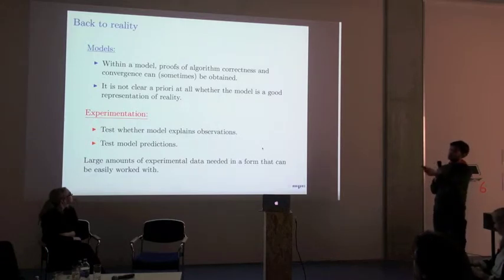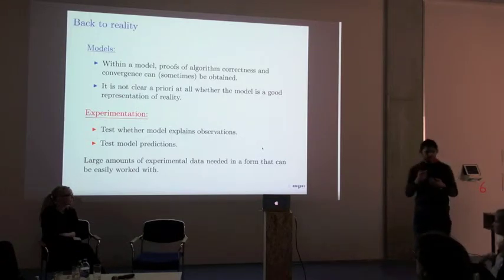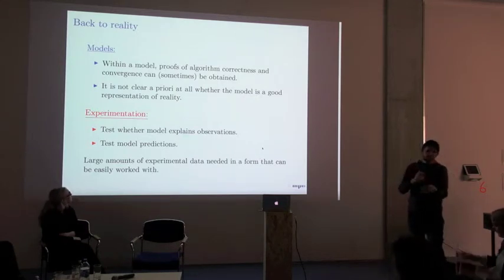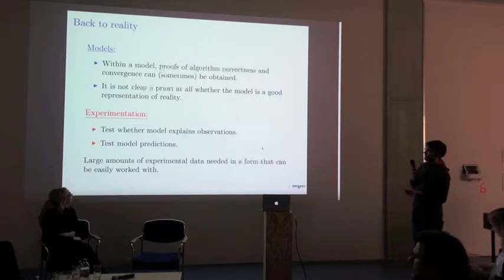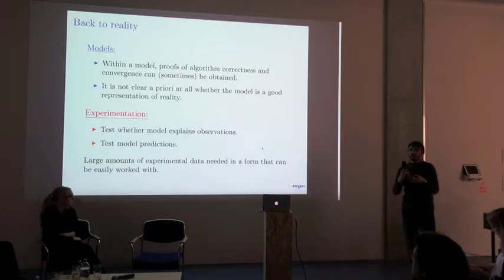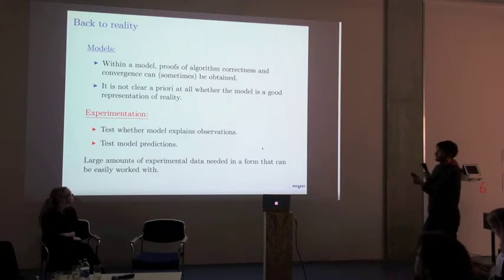We go back to reality. We have seen this model and a video. Something happens and it seems to be kind of similar. But the thing is with these models — you never know how good it is, how faithfully it represents reality. You can obtain proofs, but these proofs only talk about the model. They don't talk about what happens in the lab. So at some point you need to go back to the lab and check whether what you write down is actually valid. You need to test the predictions that you can get out of your model. Also, this maze experiment has been repeated hundreds of times, and in most of the cases — significantly — it produced the shortest path. The same is true for any model: you need to go back to the source and test it, and you need data to do that.